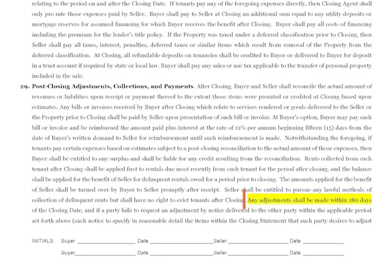Pages six and seven are largely the same as before. One thing to call out is section 29, which deals with post-closing adjustments, collections, and payments. We added a time period: post-closing adjustments must be made within 180 days. Before, this felt open-ended. We want to make sure adjustments get done within a reasonable time — 180 days should be sufficient — and it prevents one party from making a claim a year and a half later, which would be unfair to the receiving party.